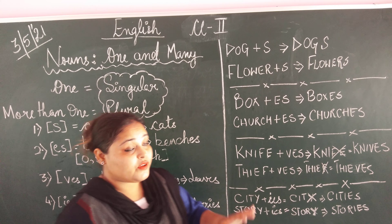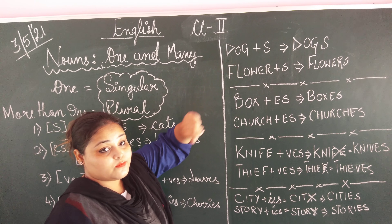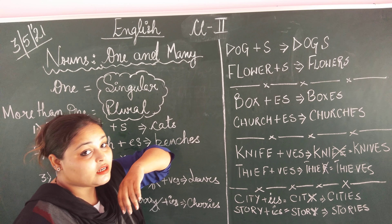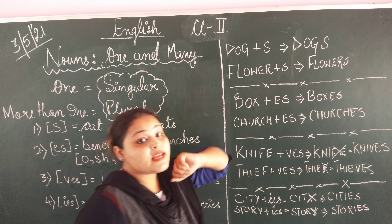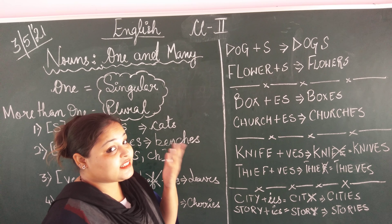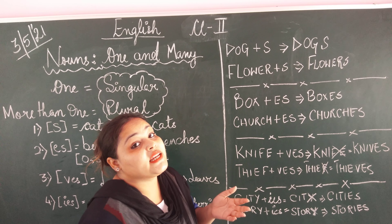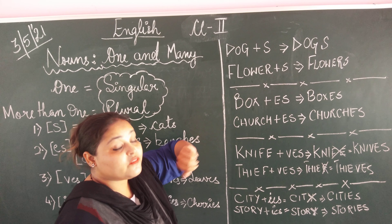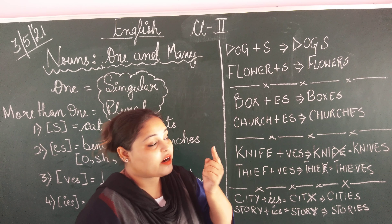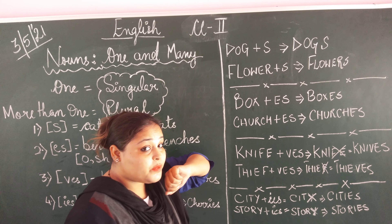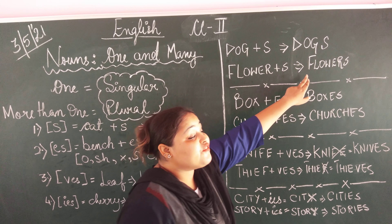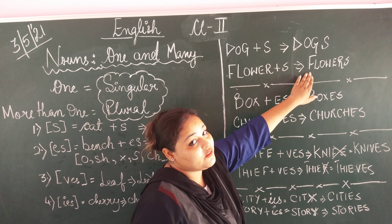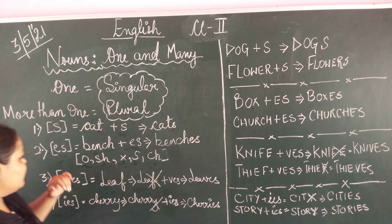There are more examples. Dog — dog means one dog. On adding S, what will it be? Dogs. Dog is one, that is singular. Dogs is many, that is plural. Then, flower — flower is one. Adding S, it becomes flowers. Singular adding S makes it into plural: flowers.